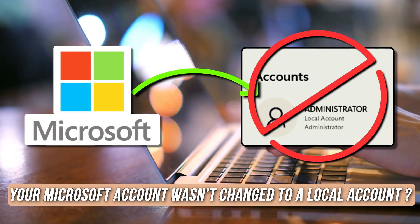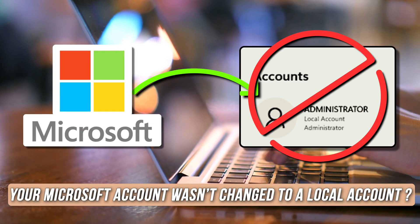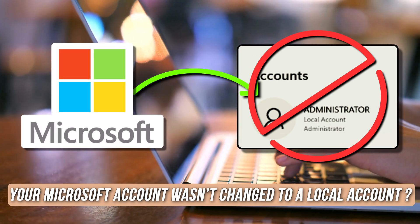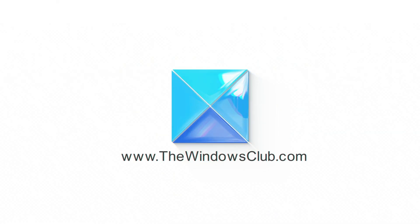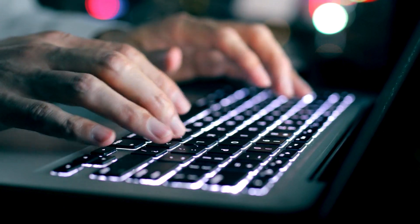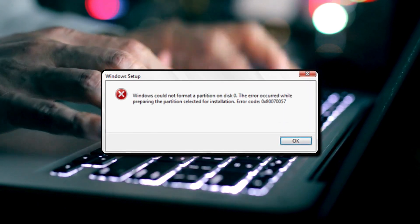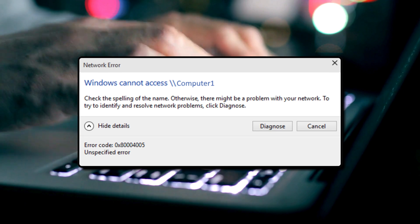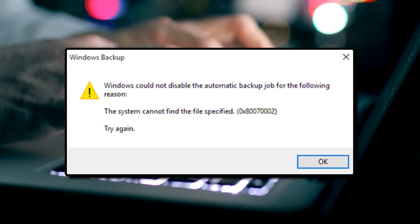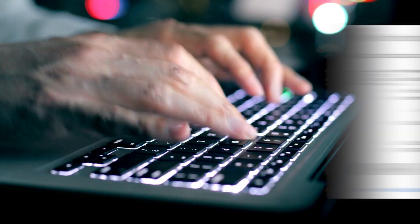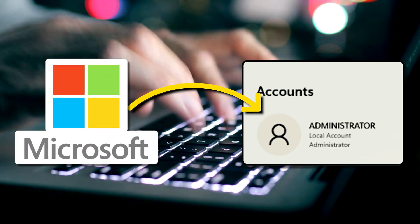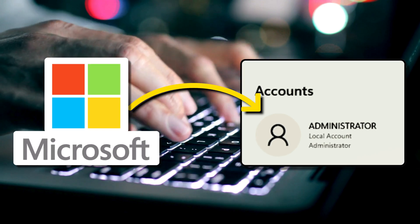Are you receiving error codes when switching from Microsoft account to local account in Windows 11 or 10? Then you are at the right place, as here is how to fix the issue. This is the Windows Club. If you receive error codes 0x80070057, 0x8004005, 0x8007002, or 0x8007003 when switching from Microsoft account to local account in Windows 11 or 10, then this video will help you.